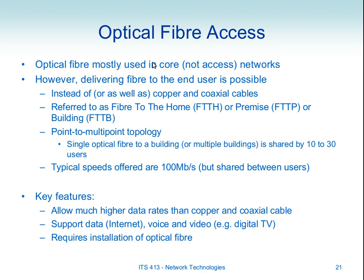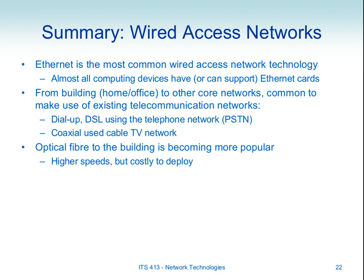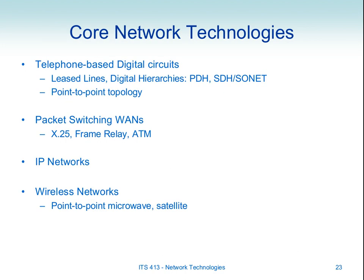In summary, for internet access to a home or building: use the telephone network with DSL; use the cable TV network with cable internet; or use newly built networks providing optical fiber to or near the home. There are differences in cost, data rates, and performance. We're still talking mainly about wired technologies. Now let's look at some wired core network technologies — what's used inside the internet itself.